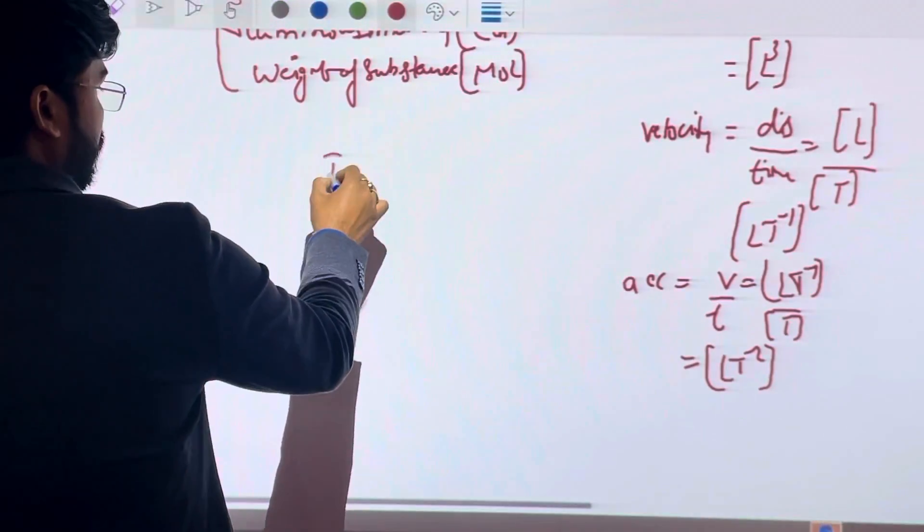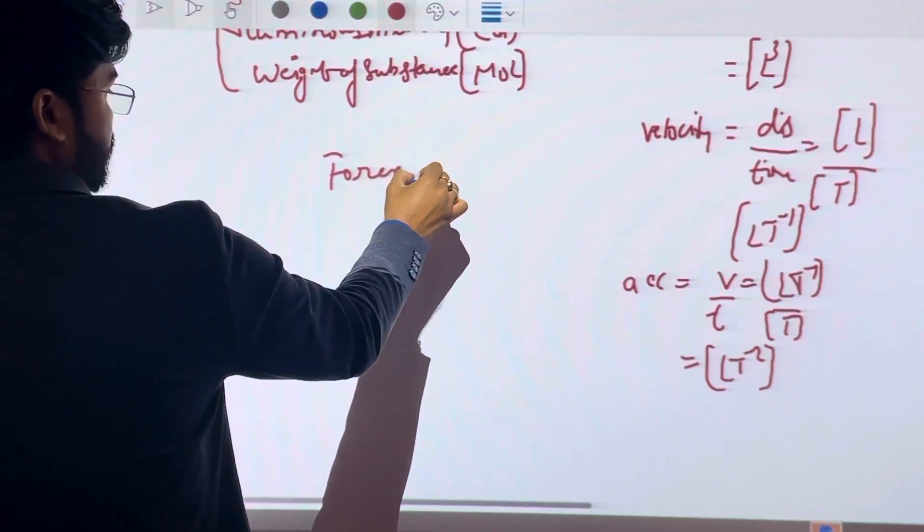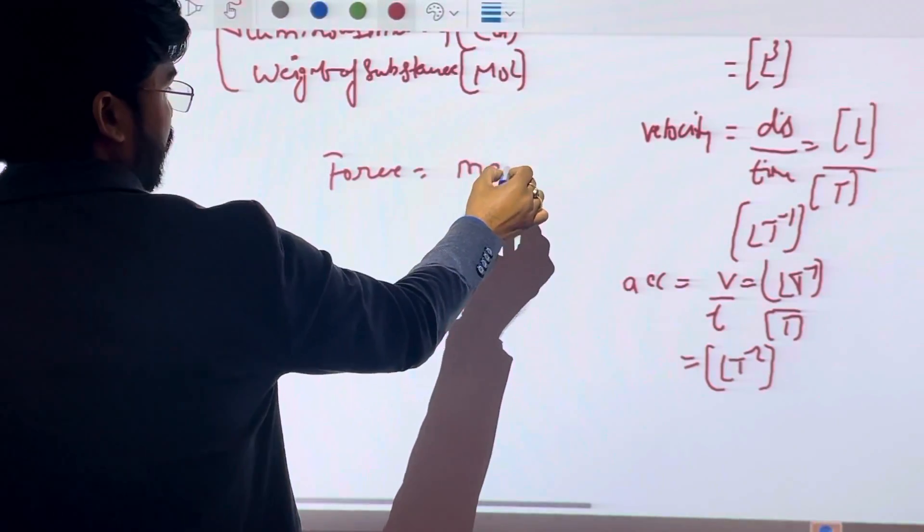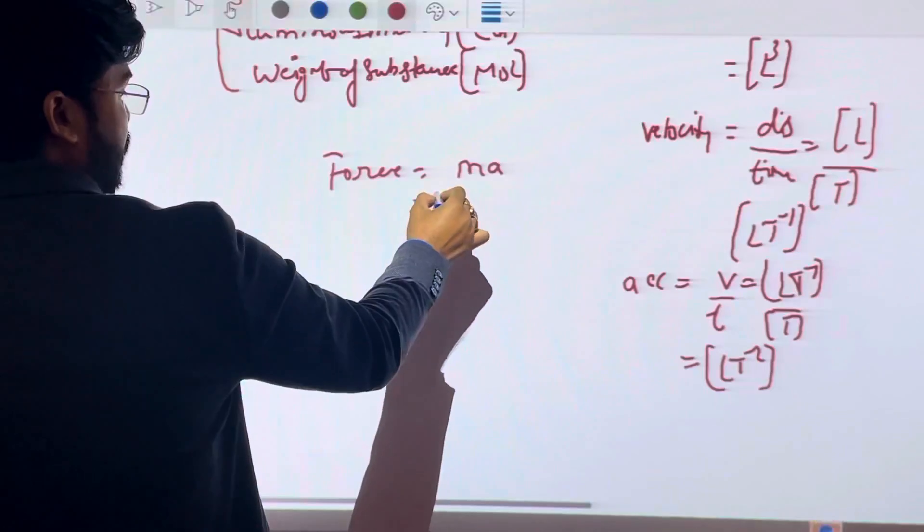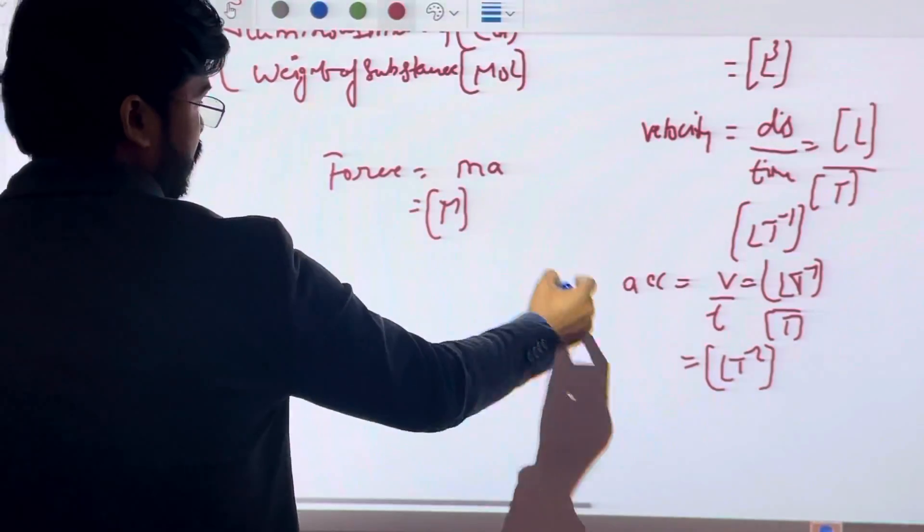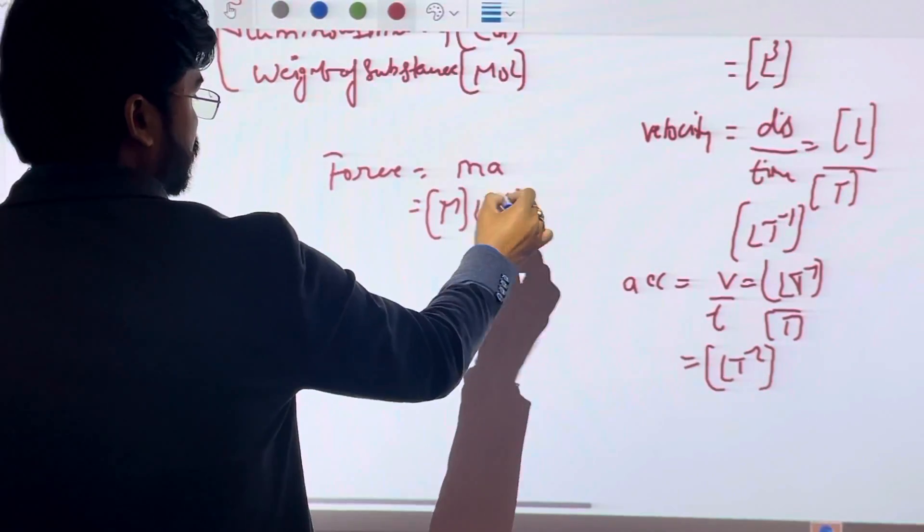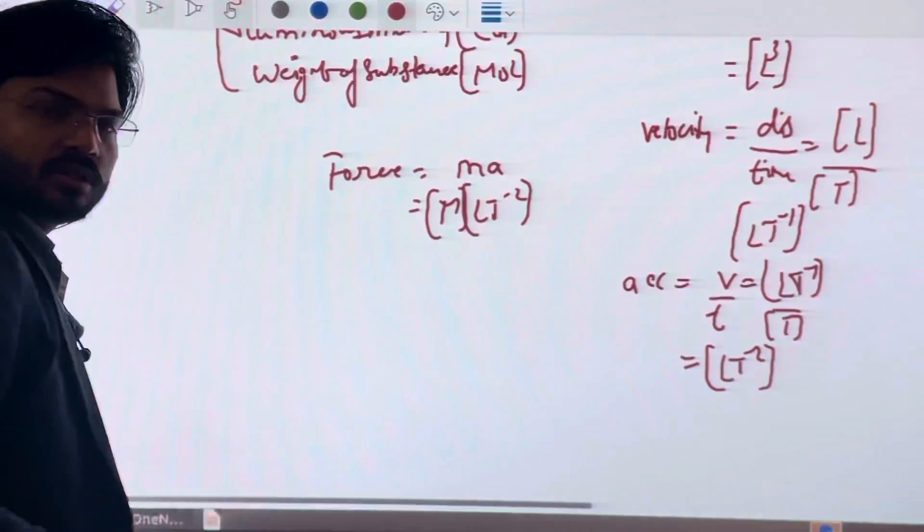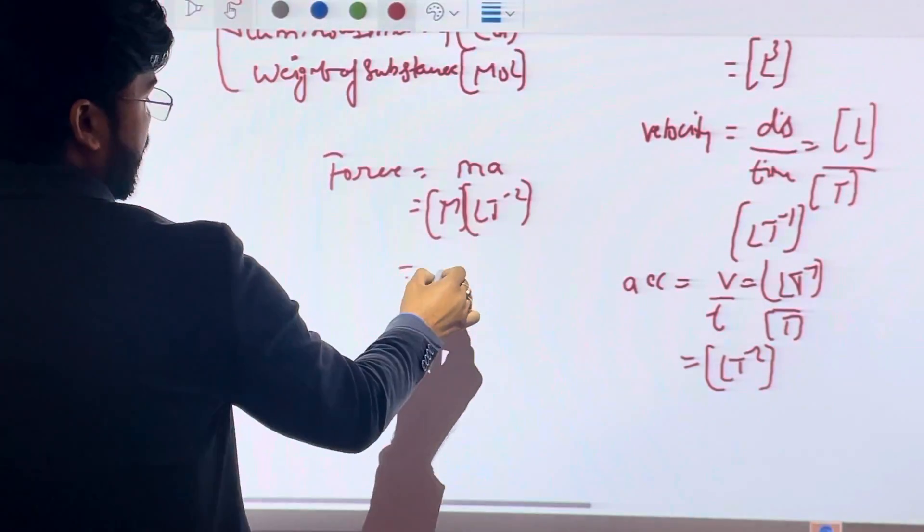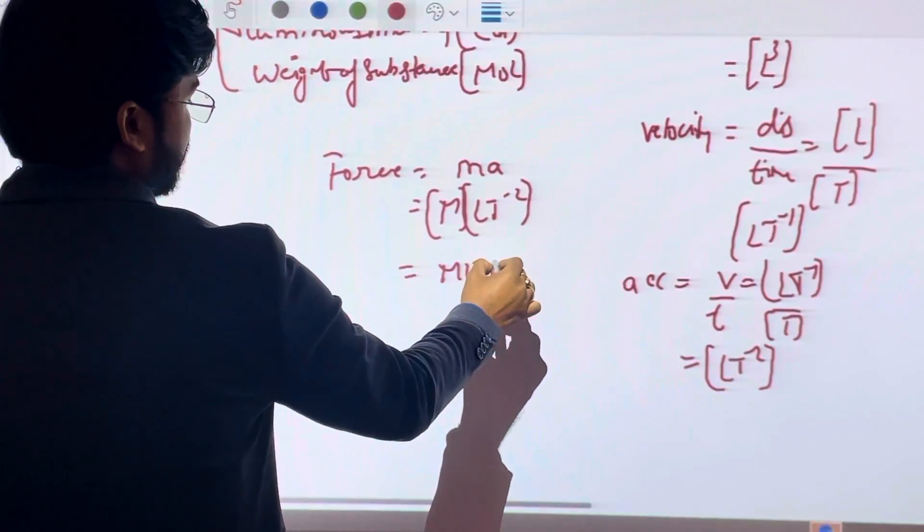Force. Force F equals ma, mass times acceleration. Mass M and acceleration LT minus 2, so the dimension of force is MLT minus 2.